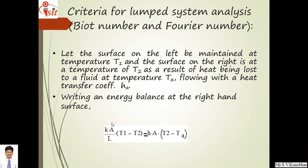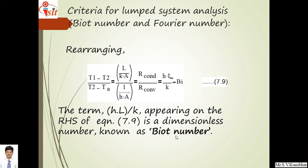Before that, let's say the left side of a slab is maintained at temperature T1 and the right side at T2, as heat is lost to a fluid at ambient temperature Ta with heat transfer coefficient h. The heat conducted equals the heat convected to the atmosphere, giving: k·A·(T1 − T2)/L = h·A·(T2 − Ta), which simplifies to (T1 − T2)/(T2 − Ta) = (L/kA) / (1/hA) = thermal conductive resistance / convective resistance. Solving this gives h·L/k, which is known as the Biot number.